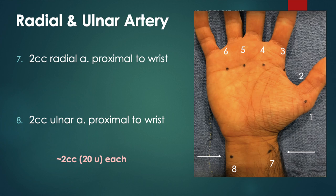An additional 2 cc's, or 20 units, is injected over the radial and ulnar arteries proximal to the wrist. The key distinction is that the radial and ulnar arteries receive 2 cc's each, whereas the 6 volar hand sites receive 1 cc each.